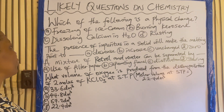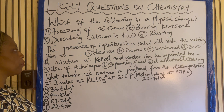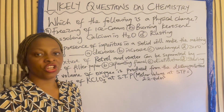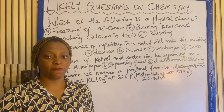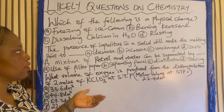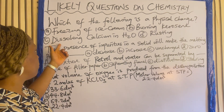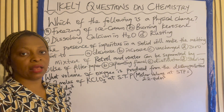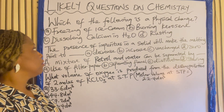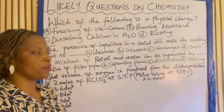Which of the following is a physical change? Freezing of ice cream, burning kerosene, dissolving calcium in water, rusting. A physical change is a change in which no new substances form and it can be reversed. Which one here can be reversed? If you burn kerosene, once it's exhausted, it has finished. If you dissolve calcium in water, you can't get the calcium back. Rusting — you can't get the iron back. But if you freeze ice cream, you can defreeze it and get back your ice cream.